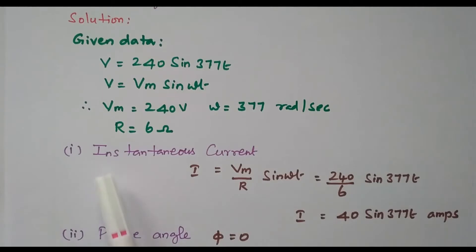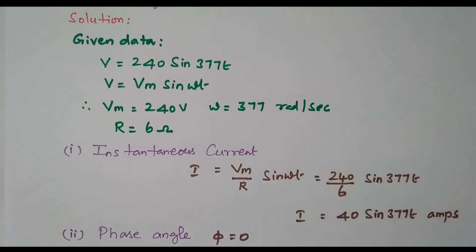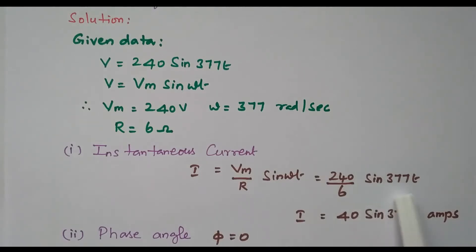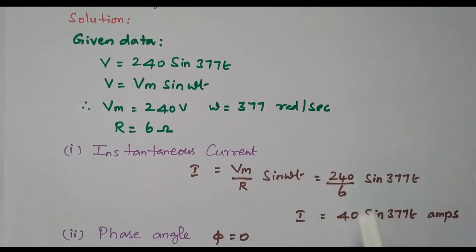First, we will find the instantaneous current. The formula is I = (Vm / R) sin ωt. Vm is 240, R is 6, so I = (240/6) sin 377t = 40 sin 377t amperes. This is the equation for current.